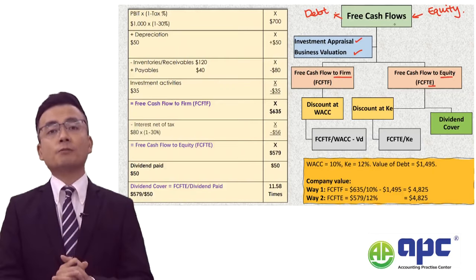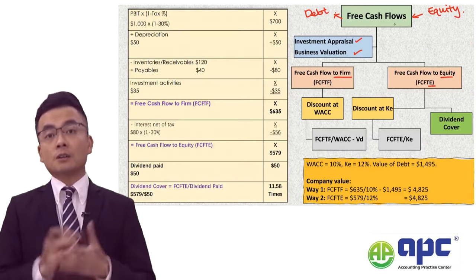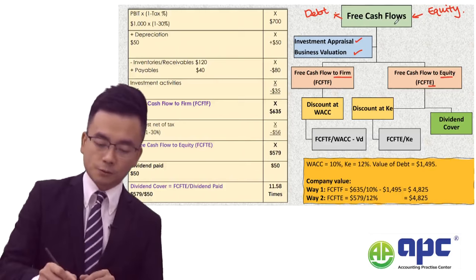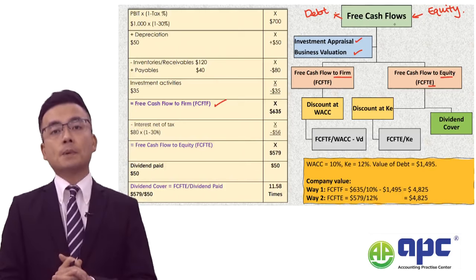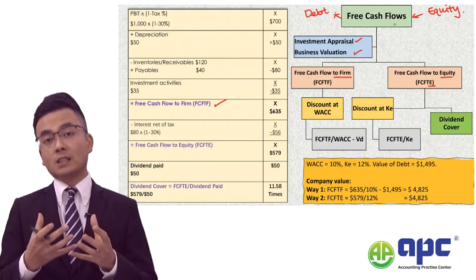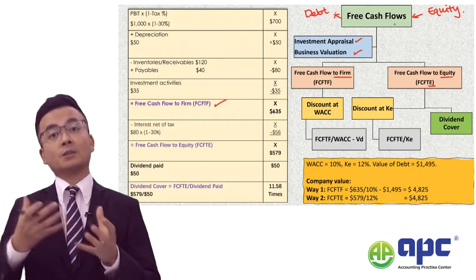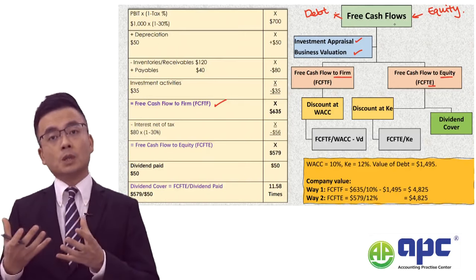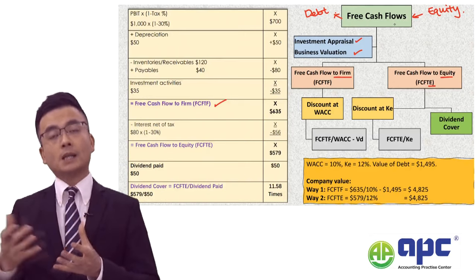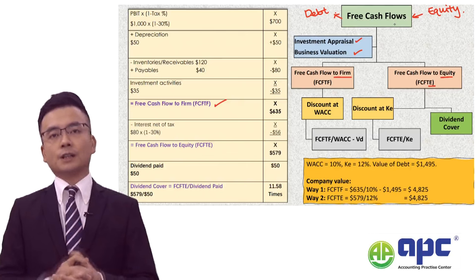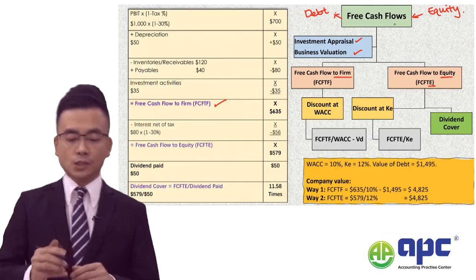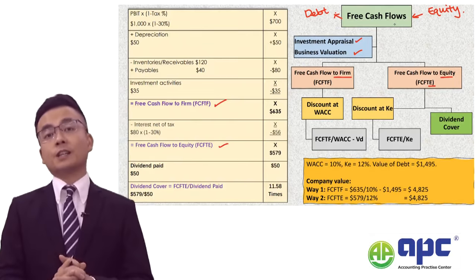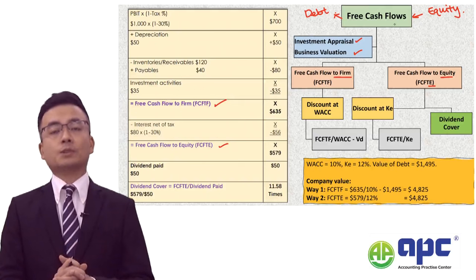To work out the free cash flows, we first calculate the free cash flows to firm, and then subtract any interest and principal — or redemption value — that we pay to the debt holders, to arrive at the free cash flows to equity.